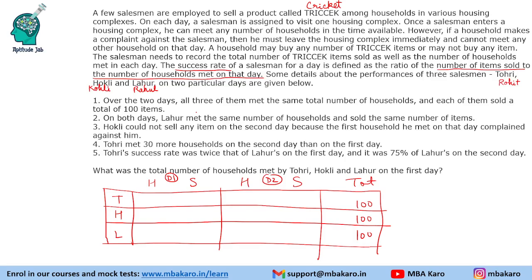The total number of households met is the same for all three of them. On both days, Lahur met the same number of households and sold the same number of items. So if he is selling the same number of items, that will be 50 and 50. And the same number of households he met on both days — let us call it X and X.